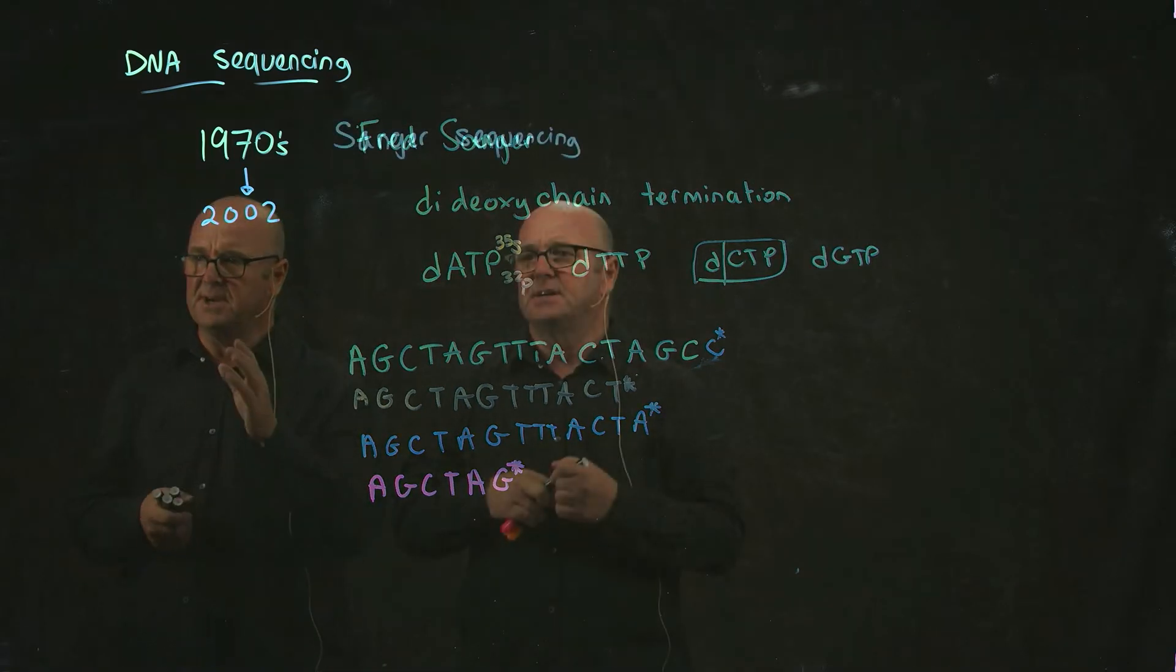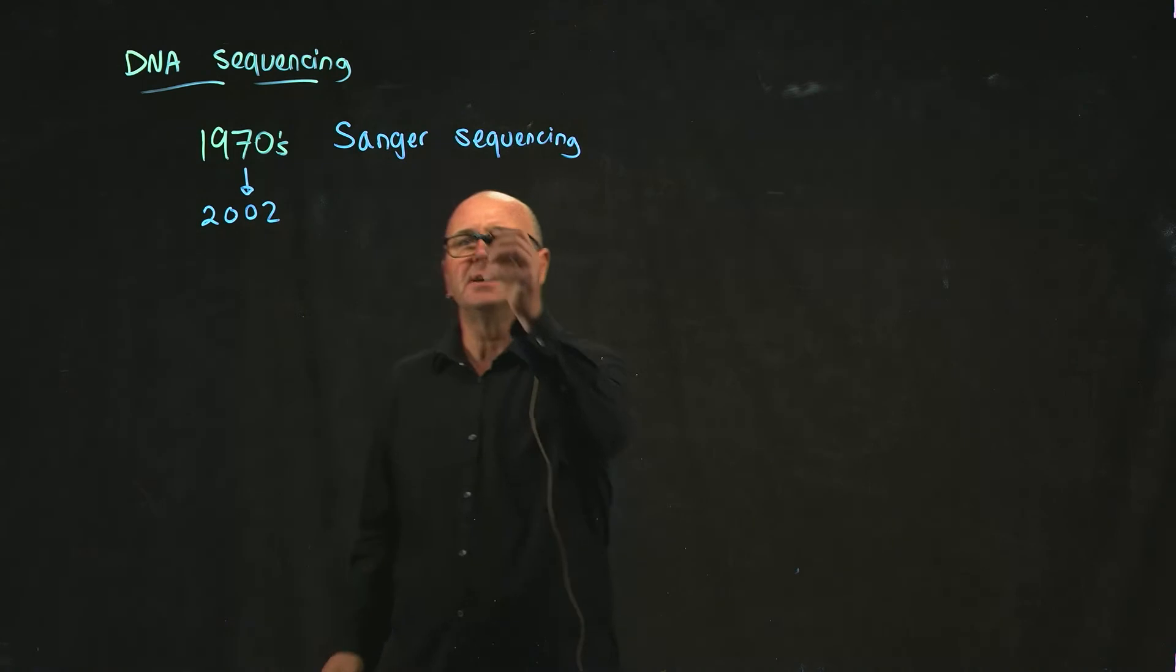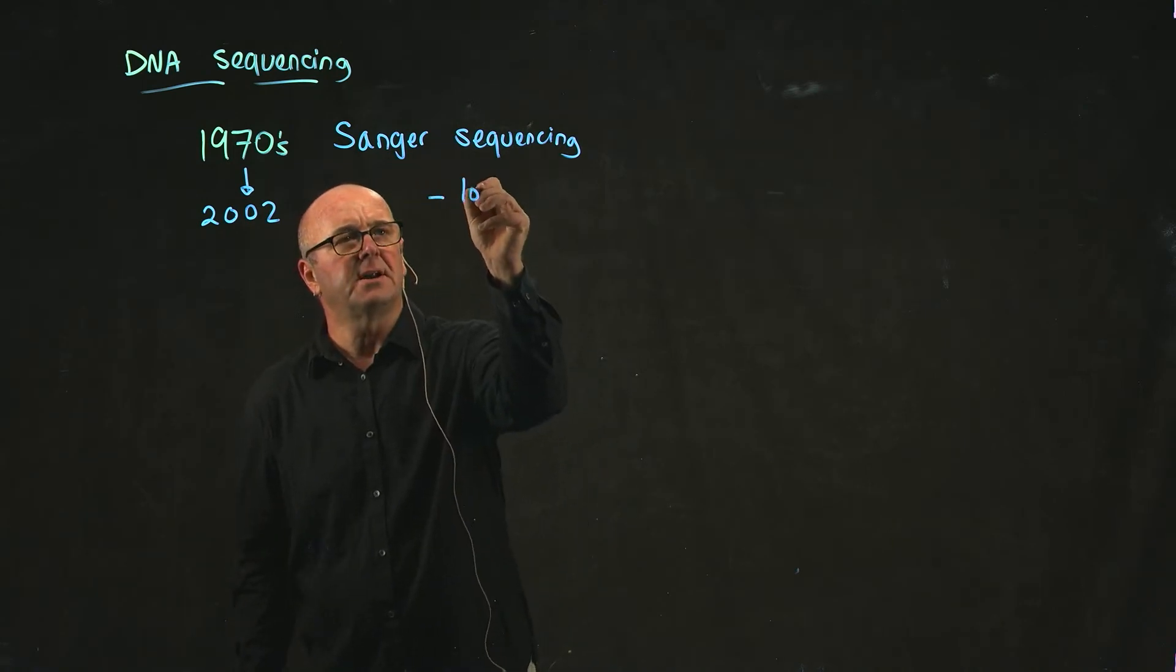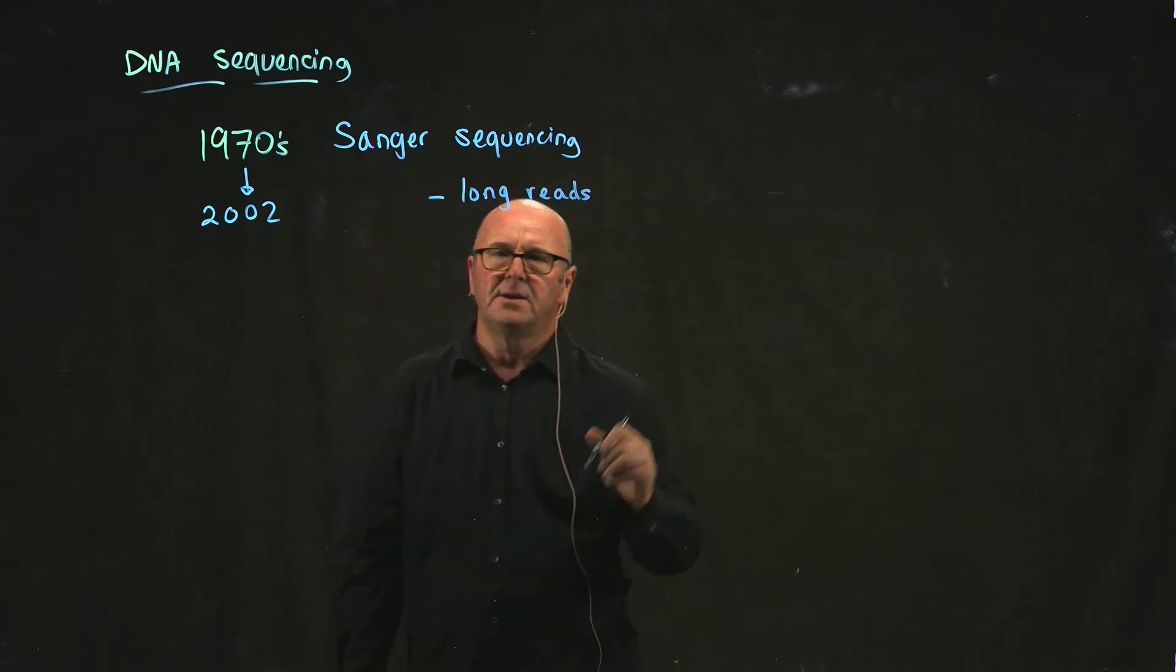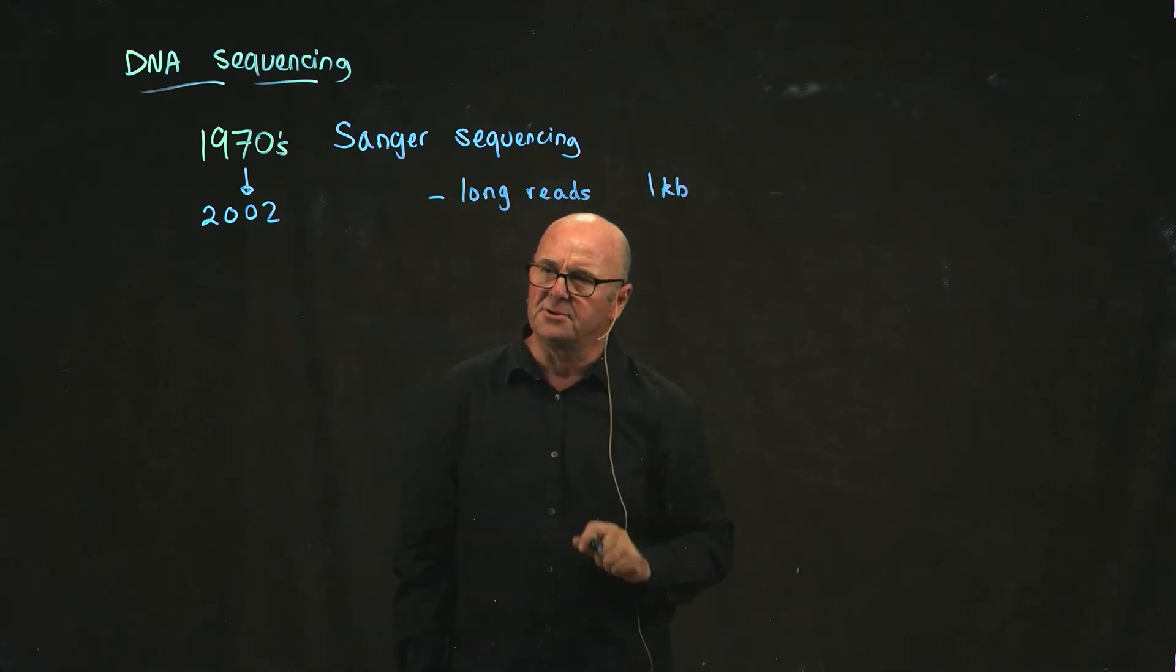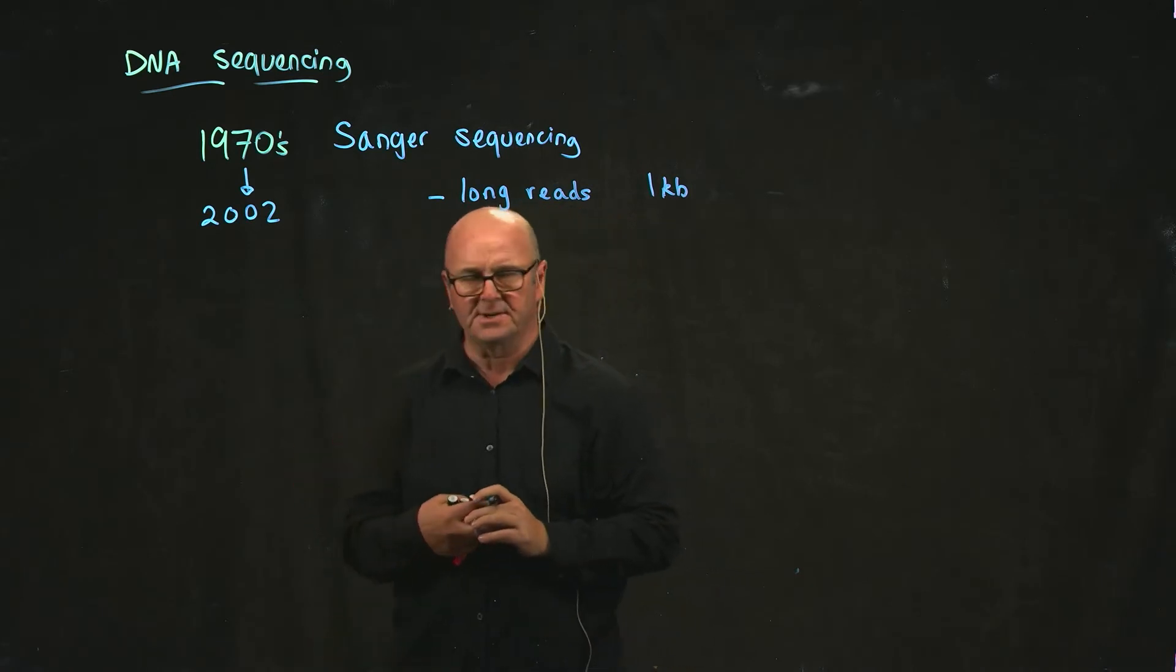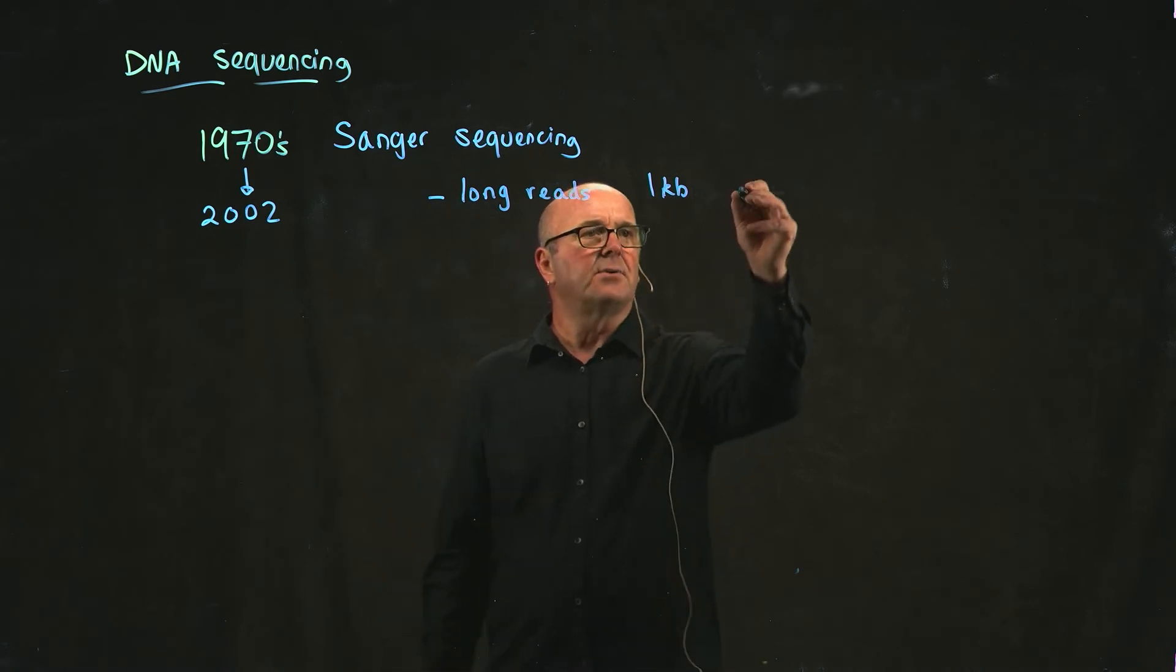The advantage of Sanger sequencing is that you can get quite long reads. And so typically you'll get about a kilobase, a bit less, maybe 800 bases. I think this particular read I'm showing is about 800 bases. And you get quite high accuracy.